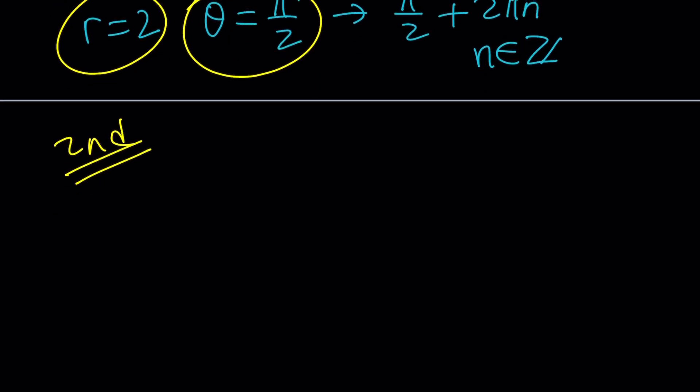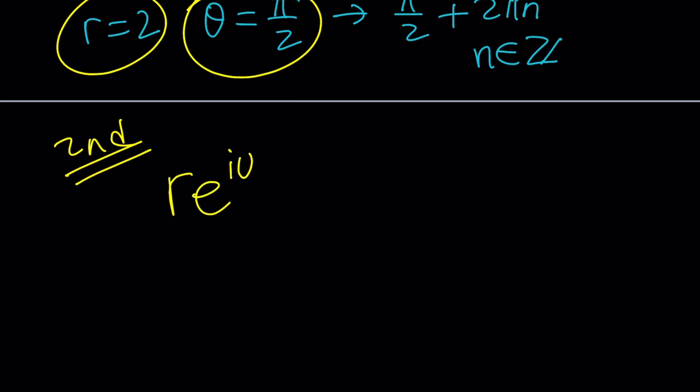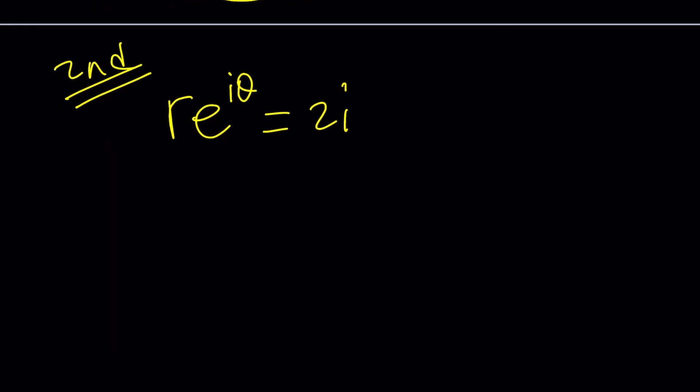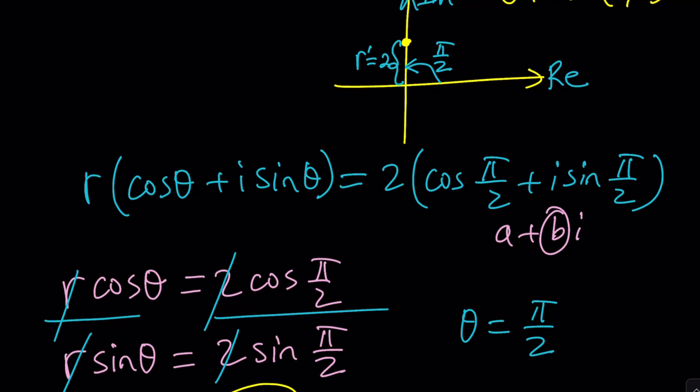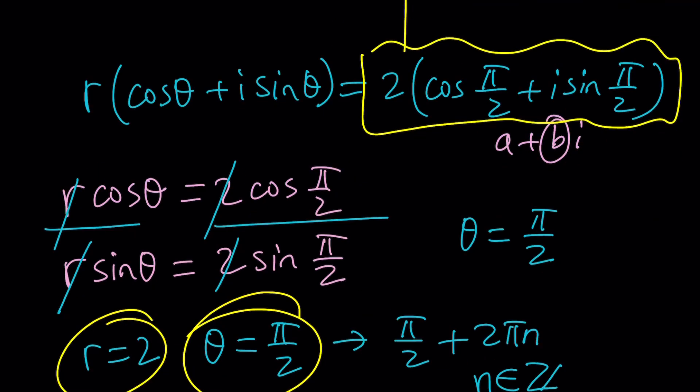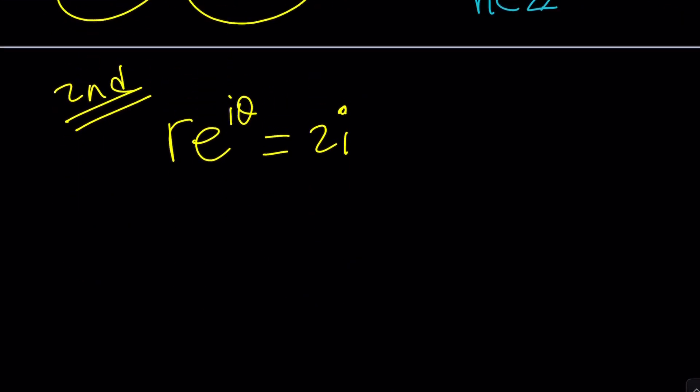Now, with the second method, we're going to stick with the Euler's formula. We're going to keep it compact. So we're going to write it as r e to the i theta equals 2i. And then just like before, we're going to write the 2i in polar form, but instead of writing it like this, which kind of takes a lot of space, we're going to write it in a more compact form.